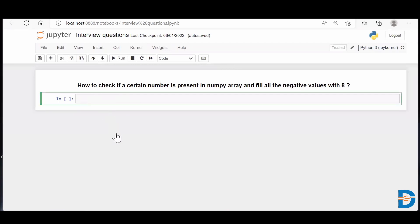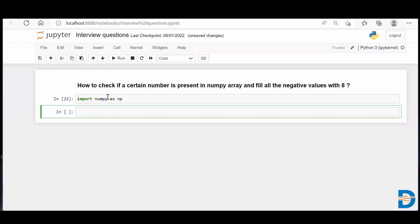So at the very first, we'll import our NumPy module. We say import numpy as np. And now the NumPy module is imported. Now we require to create a NumPy array. So for that, I'll just take a variable called my_arr and I'll say equal to np.array.